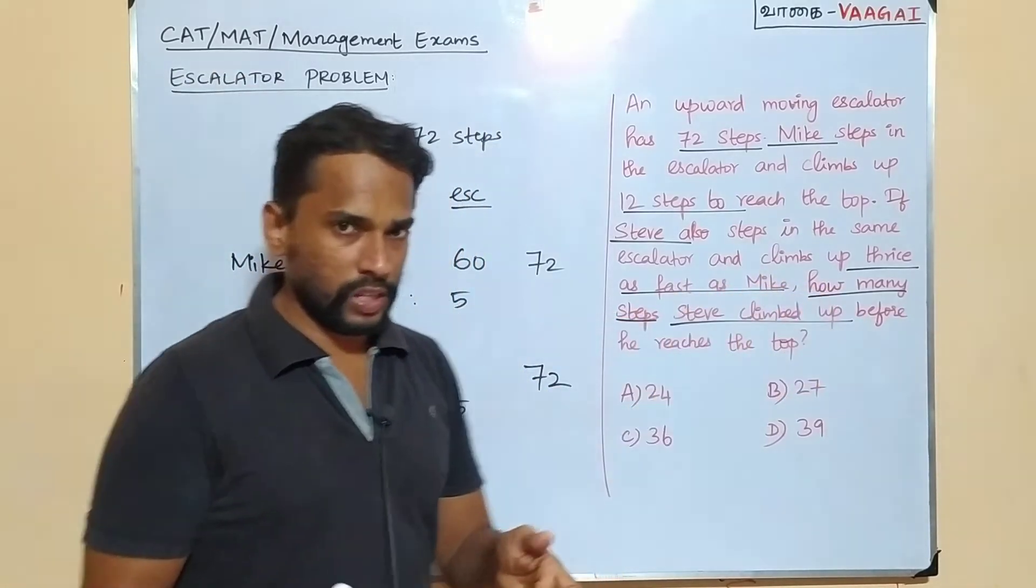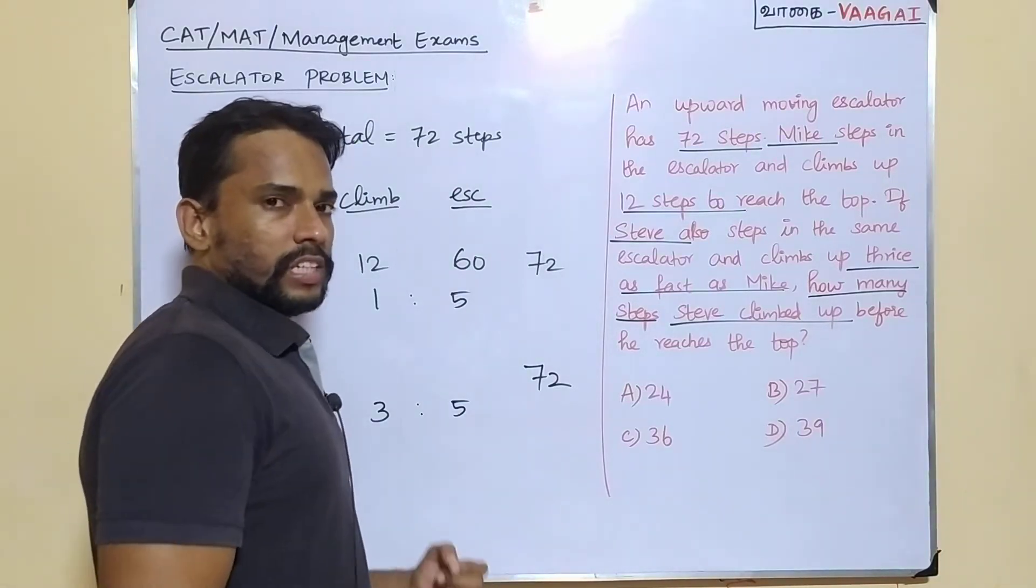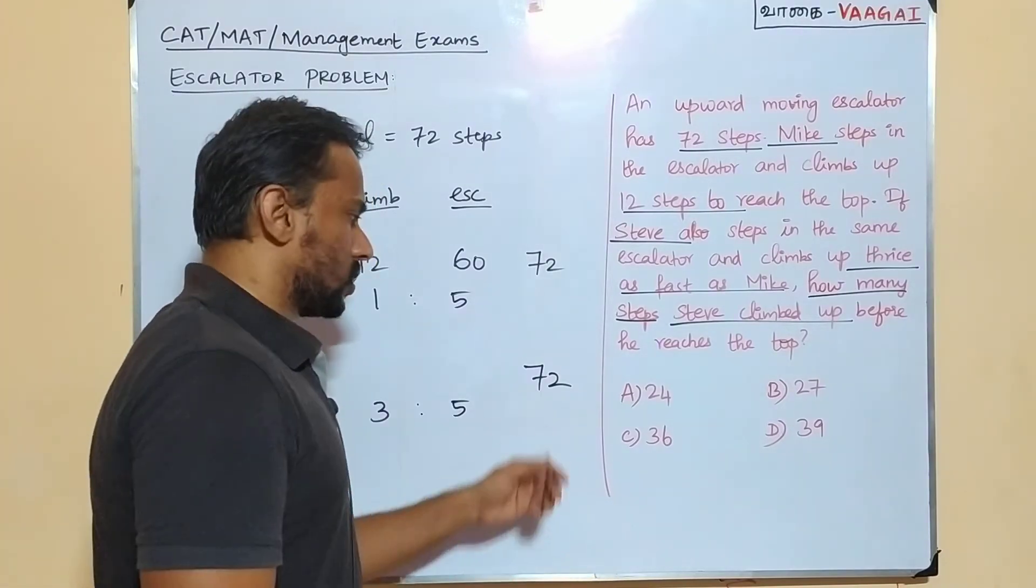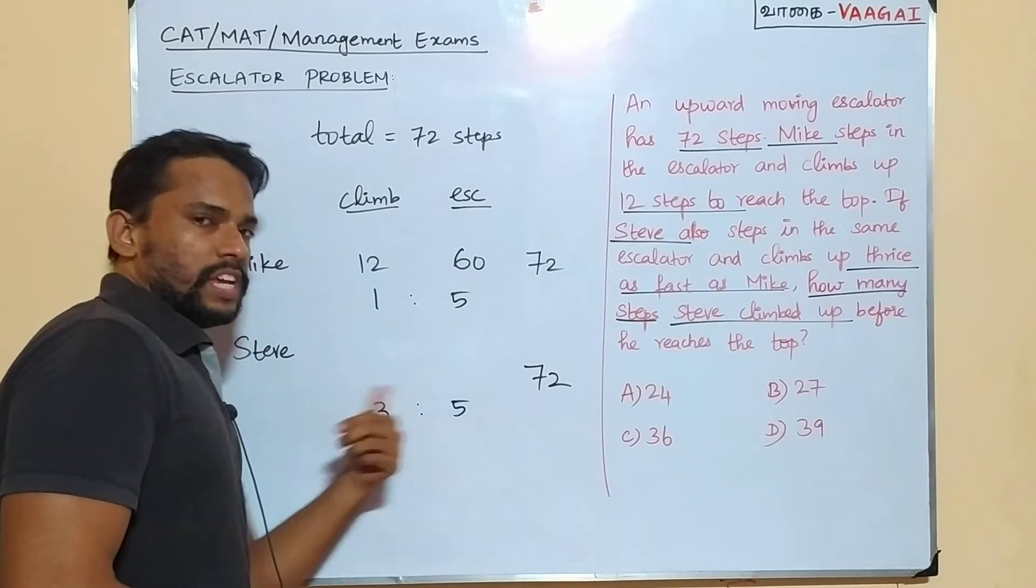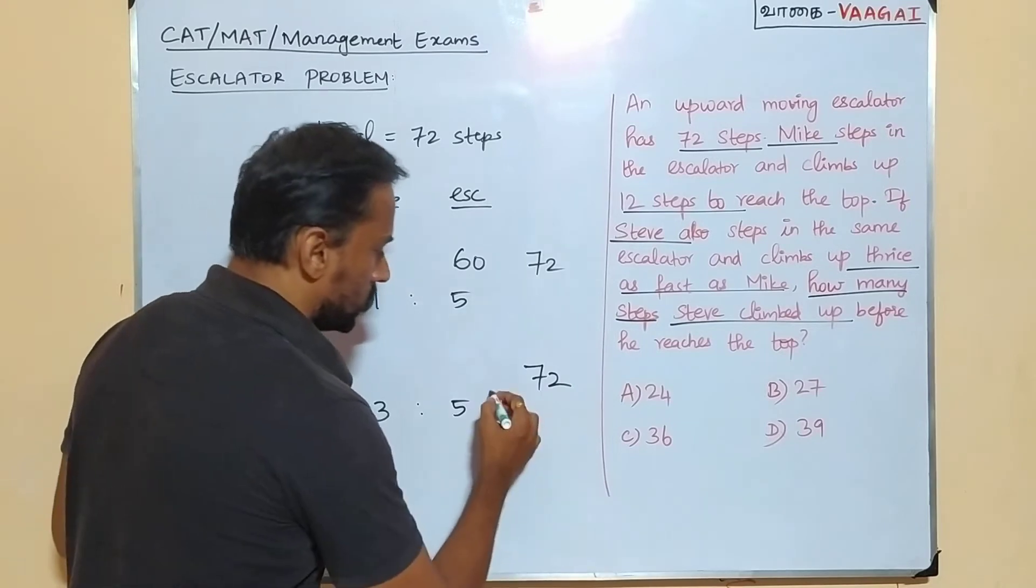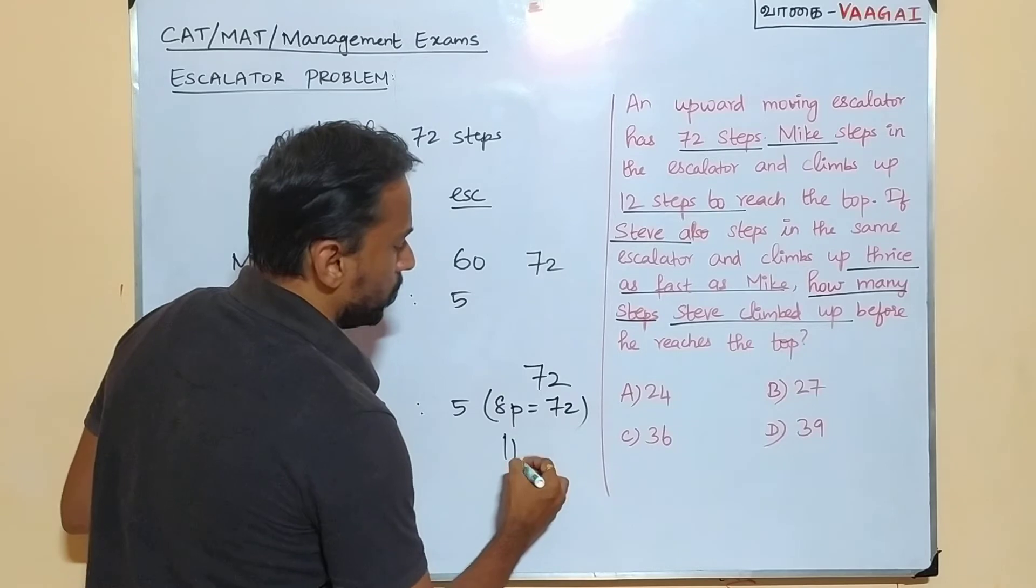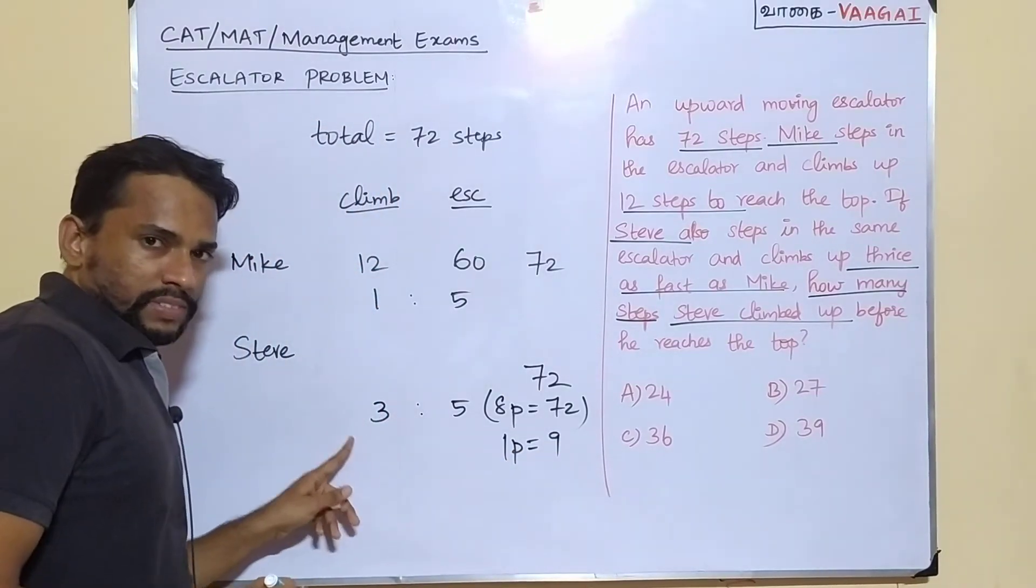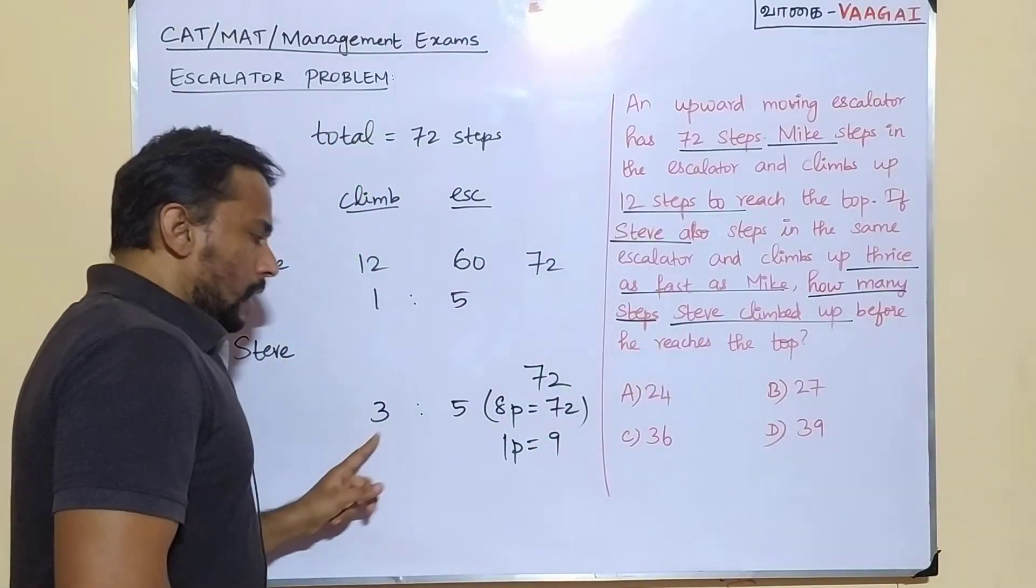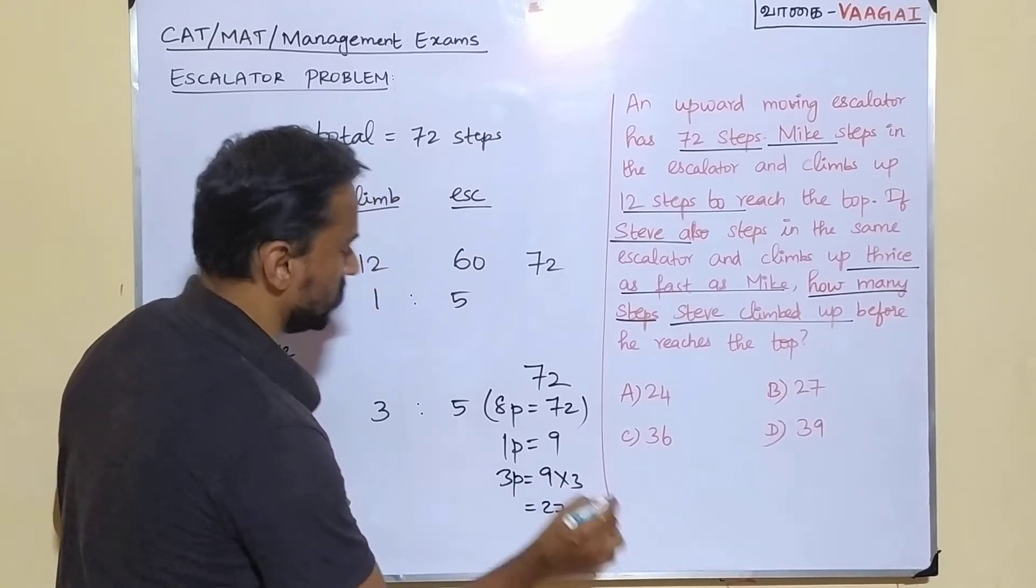Now, Steve can climb how many steps? This is going to be the question. Just divide this 72 in this 3 is to 5 ratio. That means this will easily give you the steps shared by Steve and escalator. 72 just divided in the ratio 3 is to 5. What is 3 is to 5? The total parts is going to be 8. 3 plus 5 is going to be 8 parts. So 8 parts is equal to this 72. So in that case, one part will be equal to 9. So that means we need Steve's steps. How many steps Steve is going to climb up? That's going to be the question. So in that case, 3 parts is going to be, 3 parts is going to be simple, 9 threes are, which is going to be 27 is the answer.